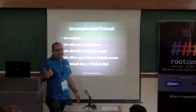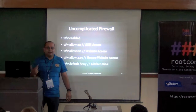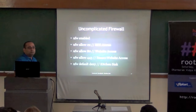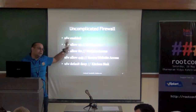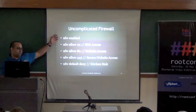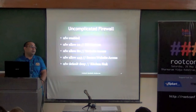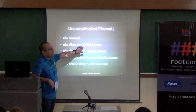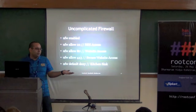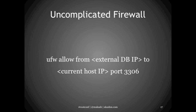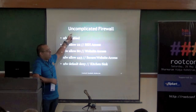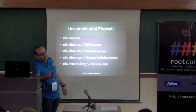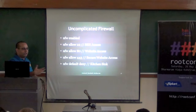Use the Ubuntu Uncomplicated Firewall (UFW). It is not a new firewall — it is just an interface to iptables. The iptables format can be complex, but UFW makes it simple. Run: ufw enable, then allow the ports you need — 22, 80, and 443 if needed. No need to allow 3306 if the database is on the same machine. Then run: ufw default deny. After that, run ufw status to see the rules in a readable format.